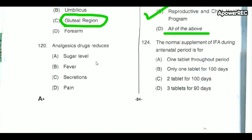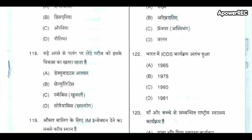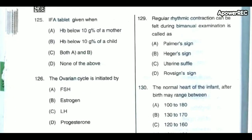An analgesic drug reduces pain. The normal supplement of IFA — iron folic acid — during the antenatal period is one tablet per day for 100 days. Iron folic acid tablets are given when the hemoglobin is below 10 gram percentage in both the mother and the child.